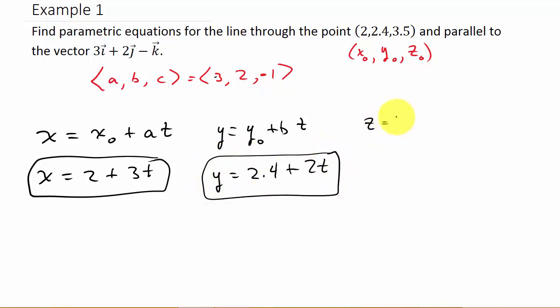And then z is z₀ + ct. So z is equal to z₀, which is 3.5, plus, and then c is negative 1, negative 1 times t. And so z = 3.5 - t.